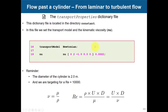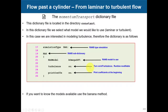The new entry you need to define is the transport model as Newtonian. You'll adjust your viscosity to target a Reynolds number around 10,000 — you can change viscosity or inlet velocity, it's up to you. In the momentum transport dictionary, you define your turbulence model — set it to RAS and select a turbulence model. I recommend always using the k-omega SST, it's very reliable.